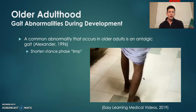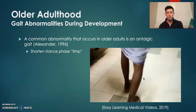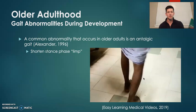Common abnormalities seen during this stage include an antalgic gait, which is a shortened stance phase or a limp. This is commonly caused by degenerating tissue and things like arthritis. With this limp, you try to avoid pain by shortening the stance phase.